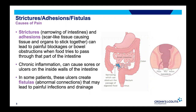Strictures, adhesions, and fistulae are all complications that people can develop in the setting of inflammatory bowel disease. Strictures are narrowings in the bowel itself. Adhesions are fibrous tissues that form outside of the bowel, related to significant inflammation or prior surgeries. Both can make it difficult for food and other materials to pass through the intestines and can cause significant discomfort. Fistulae are abnormal connections between different structures in the body, which can lead to pain, infections, and abnormal drainage.